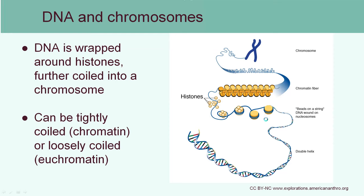DNA is the double helix, but that's what it looks like zoomed in — a regular microscope won't show this shape because the molecule is too small. Inside your cells, the DNA molecule winds up on special proteins called histones, winding and winding until it forms a shape that is visible under a microscope. That visible structure is your chromosome — the DNA all wound up, like a long string of yarn wound into a ball. The cell does this to organize DNA so it doesn't get damaged during cell division.